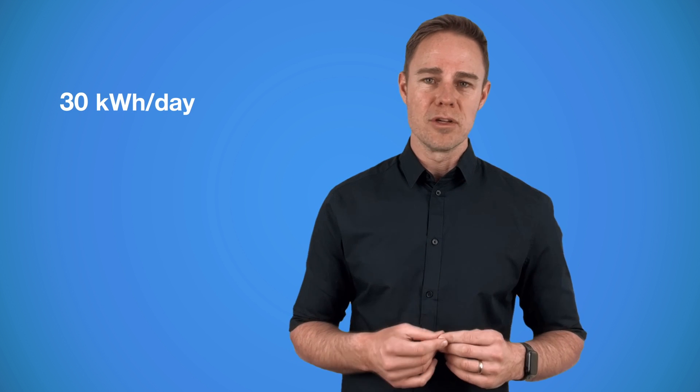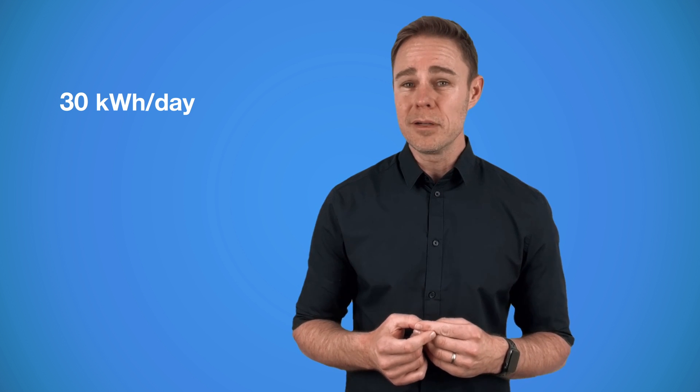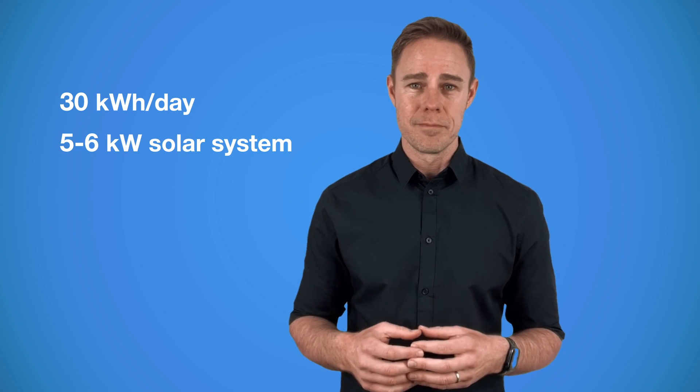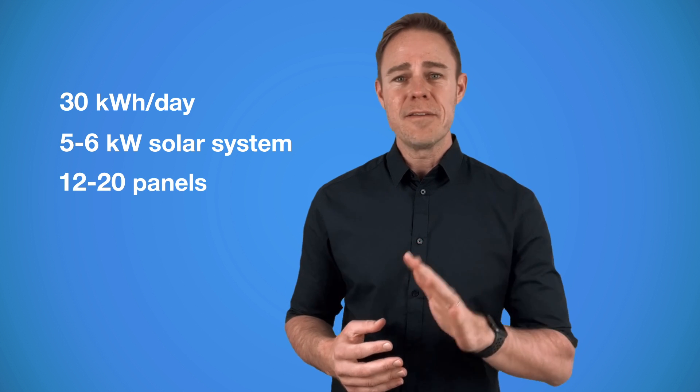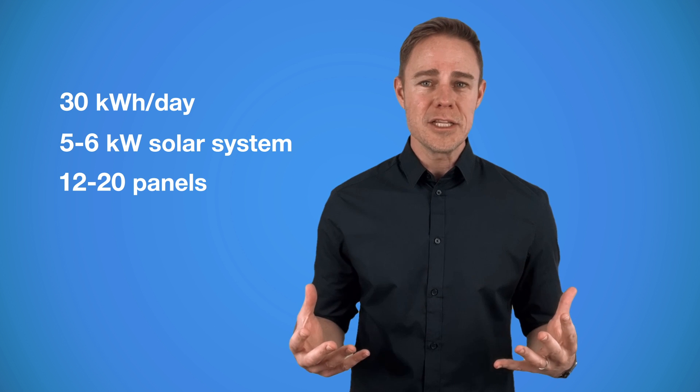The average energy consumption of an American house is about 30 kilowatt hours per day. To get that amount of energy with the sun, you need to build a 5 to 6 kilowatt solar system—that's 12 to 20 panels. Today, 5 kilowatts is in fact the most popular size of a home photovoltaic installation in the US. And that's basically how solar panels and solar systems work in a nutshell.